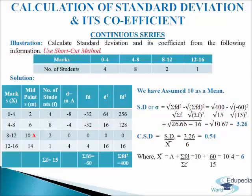Let us understand shortcut method with the help of the following illustration. We have to calculate standard deviation and its coefficient from the following information using shortcut method. Marks and number of students are given to us. For the solution we will make a table of 7 columns. In the first column we will write down marks, denoted by letter x: 0 to 4, 4 to 8, 8 to 12, and 12 to 16. In the second column we will write midpoints, denoted by letter m: 2, 6, 10, and 14. We have taken 10 as assumed mean.